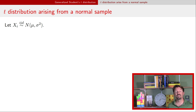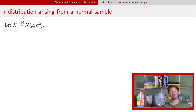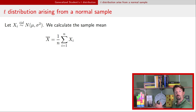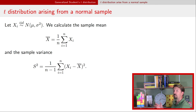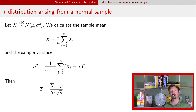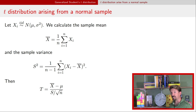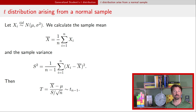Now let's talk about how t-distributions naturally arise when you have a normal sample of data. If x_i are independent observations from a normal distribution with mean mu and variance sigma squared, and you calculate the sample mean x-bar (the sum of observations divided by n) and the sample variance (sum of squared deviations from the mean divided by n minus 1), then the ratio of (x-bar minus mu) divided by (sample standard deviation divided by square root of n) has a standard Student's t-distribution with n minus 1 degrees of freedom.